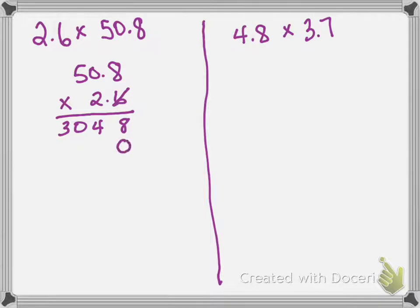I'm moving to the next place value, we've got to add a 0. Now that I've done that, I can cross multiply 2 times 8, which will give me 16, and I'm gonna regroup that 1. Again, 2 times 0 will be 0, plus 1 is 1, and 2 times 5 is 10.